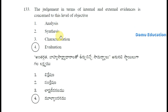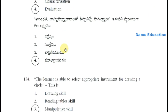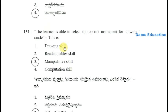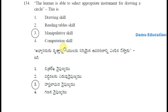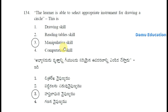The judgment in terms of internal and external evidences is concerned to this level of objective evaluation. The learner is able to select appropriate instrument for drawing a circle. This is manipulative skill.